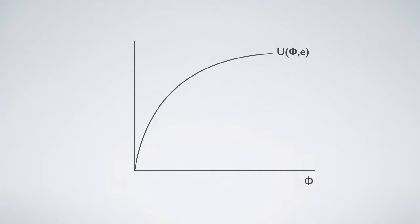This video disproves the maximization on expected utility. Here U is a utility function and it is concave with respect to theta. Any point on this connecting line forms an expected utility.